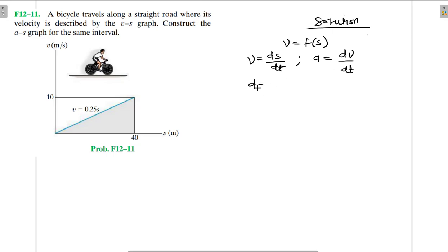We have dt is equal to ds over v and we have dt in the other end there is equal to dv over a, and you can equate the two. Then we'll have ds over v which is equal to dv over a.